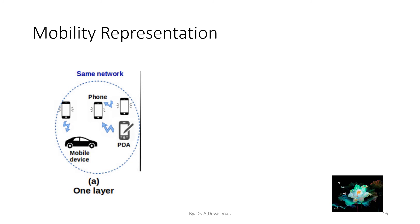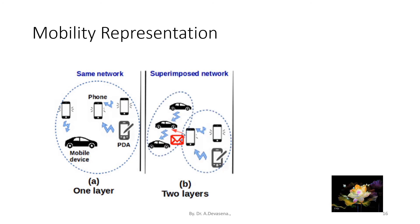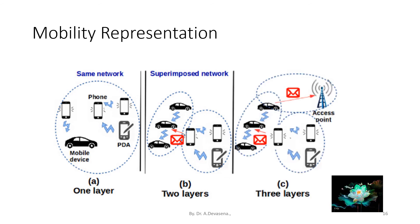The mobility representation is shown below. In a one-layer network, mobility happens within the same network between the source and the sink. In a superimposed two-layer network, information can be passed from one layer to another. There is also a three-layer superimposed network, where mobility takes place between all three layers.